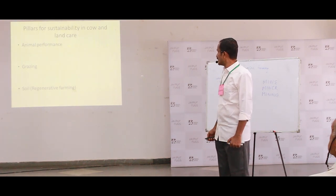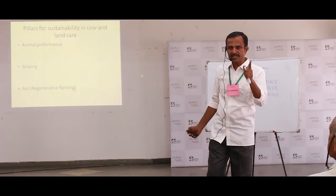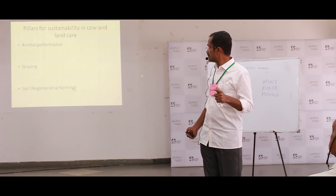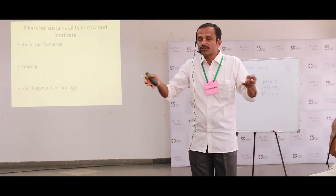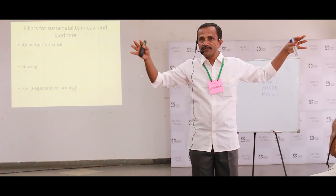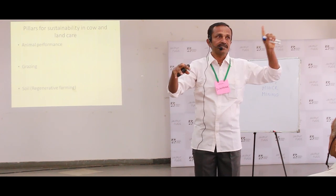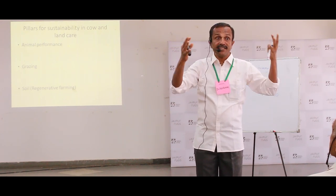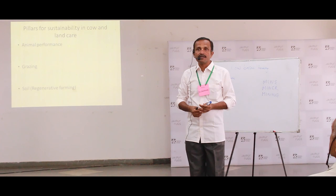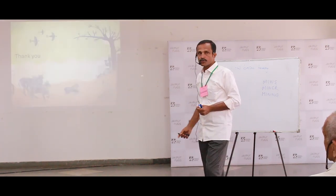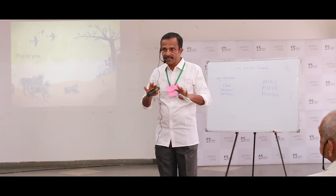The pillars for sustainability in cow and land management are three: one, animal performance — how your animals are performing shows whether your system is functioning properly; two, grazing — are they being grazed; three, soil regeneration — is your soil regenerating. By seeing whether the soil is degenerating, whether a grazing system is in place, and whether your animals are healthy, you can tell whether your system is functioning properly. This was the introduction to the coming course.